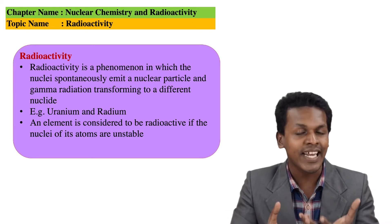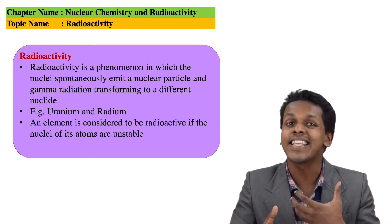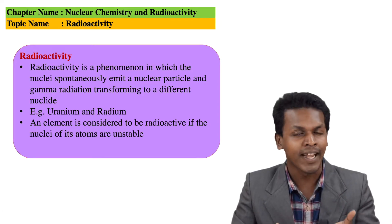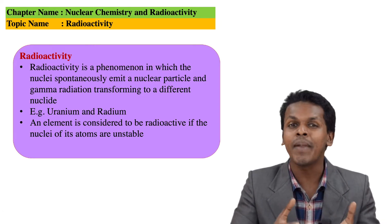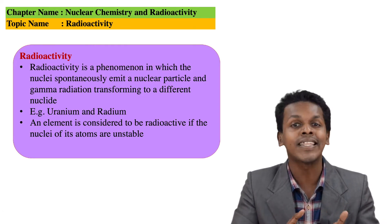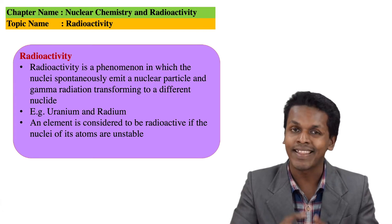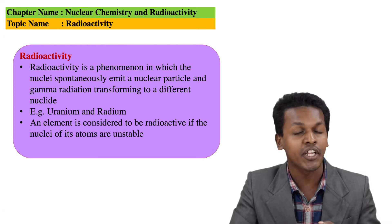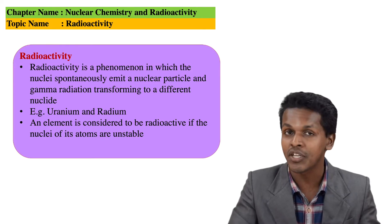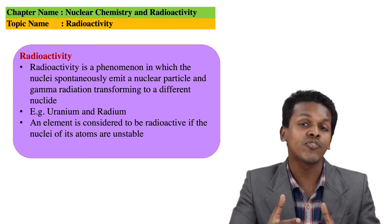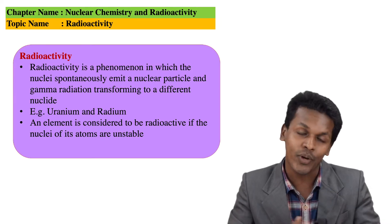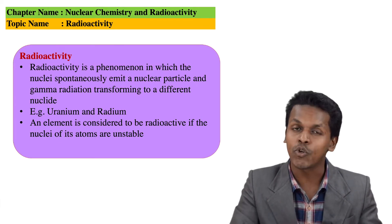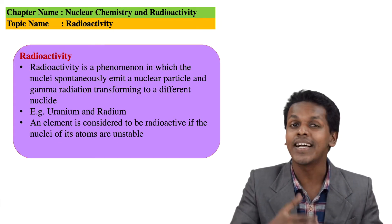Usually this radioactivity is exhibited by radioactive elements, for example uranium and radium. These are the unstable nuclides, and that's the reason they have to emit energy in the form of alpha radiation, beta radiation, and gamma radiation by transforming itself into a new nuclide.